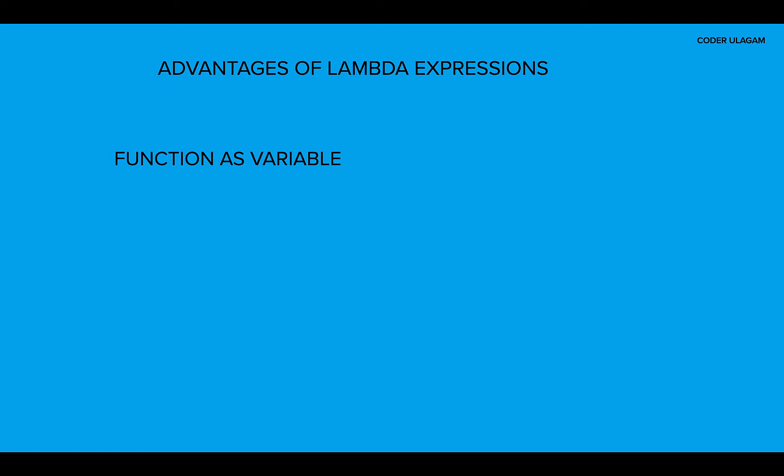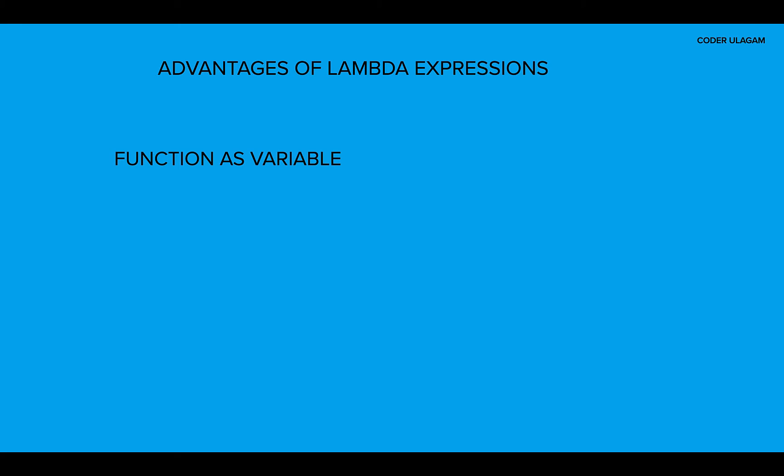Lambda expressions allow functions as a variable. You can store the entire function or method in a variable name. Typically in Java, we store a value — an integer or some object — in a variable and pass that variable across to different methods or classes. Until Java 8, we didn't have the concept of passing an entire method as a variable. Lambda expressions achieve just that — you can store the entire functionality of a method in a variable and pass it across. This is called behavior as a parameter, and it's very convenient when multiple classes use the same behavior.